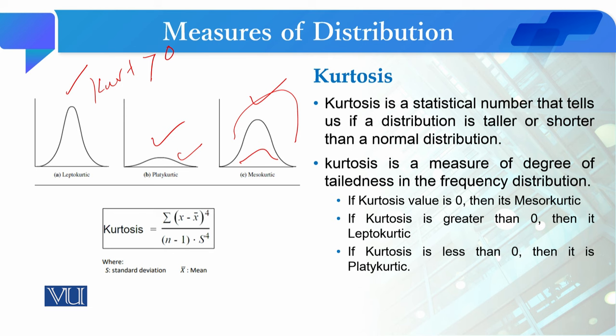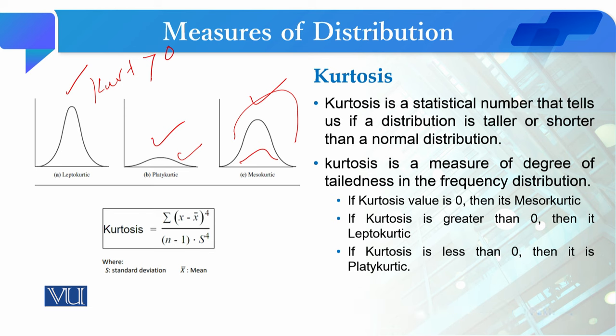Normal distribution کی assumption کو check کرنے کا statistical test بھی ہے جو properly کیا جاتا ہے۔ وہ ہم جب inferential statistics کریں گے اس وقت study کریں گے۔ ابھی ہم descriptive statistics کر رہے ہیں، تو descriptive analysis میں SPSS یا کسی بھی software میں skewness اور kurtosis کی value compute کر سکتے ہیں، اور وہ ہم اگلے module میں دیکھیں گے۔